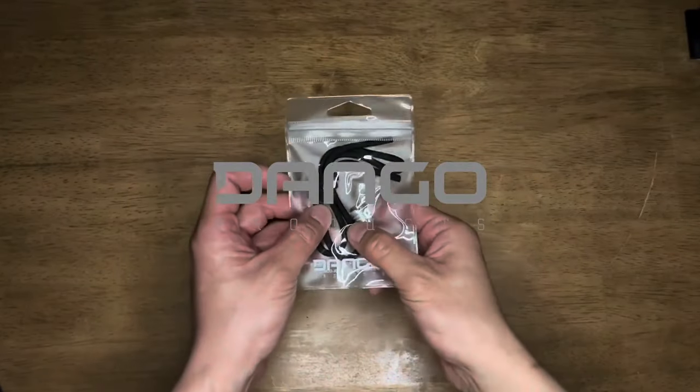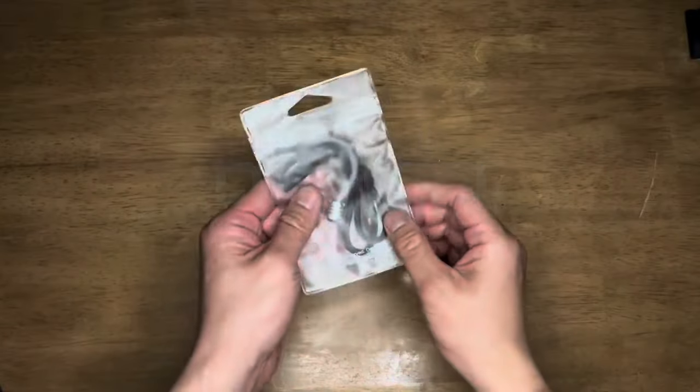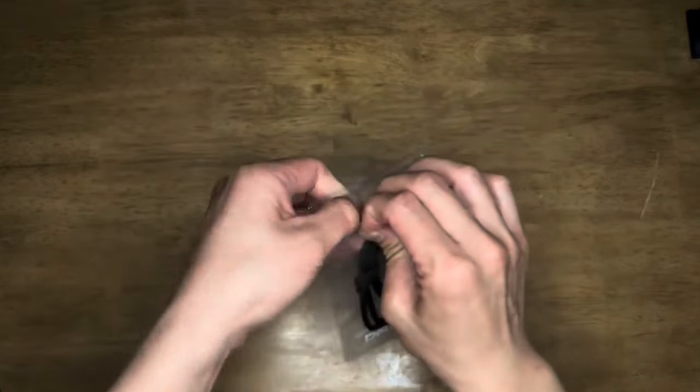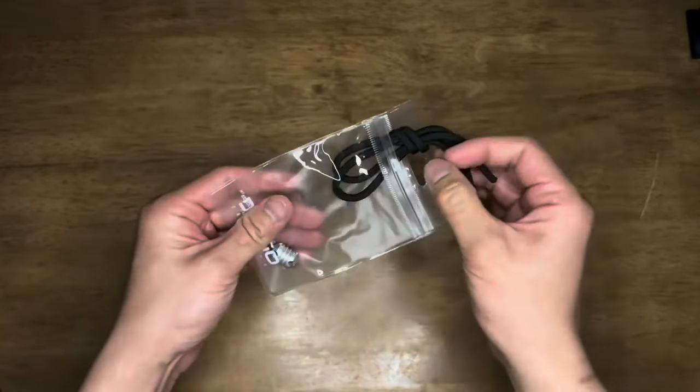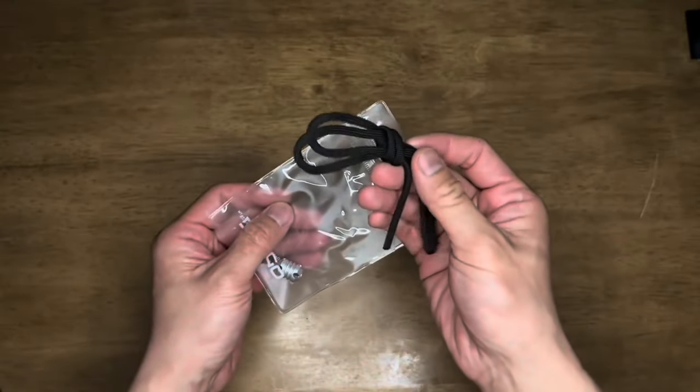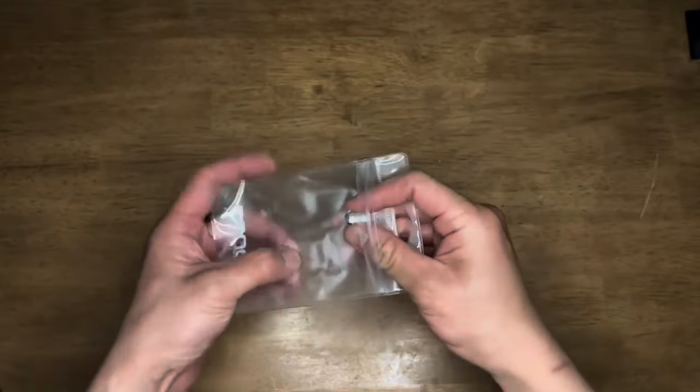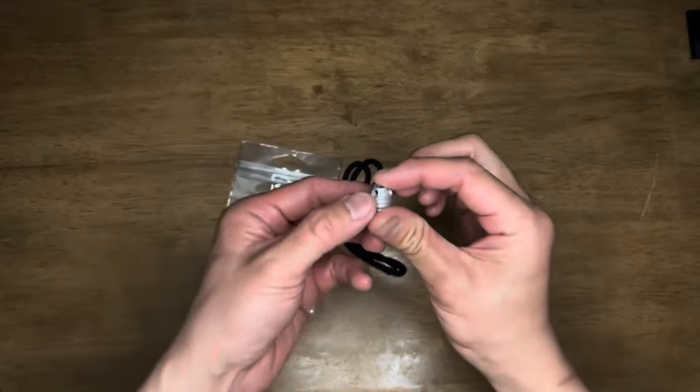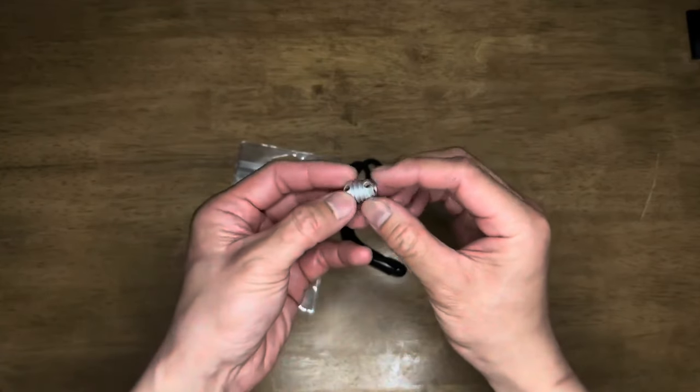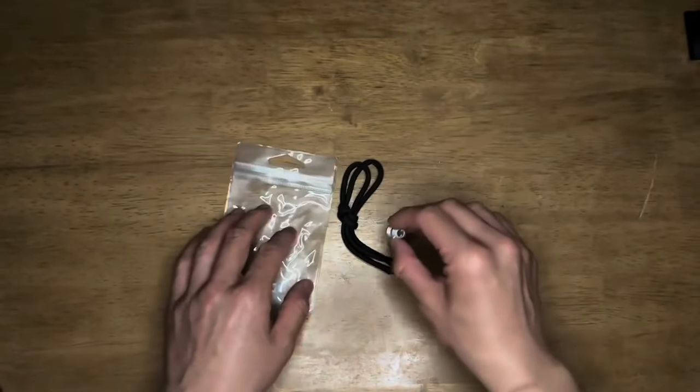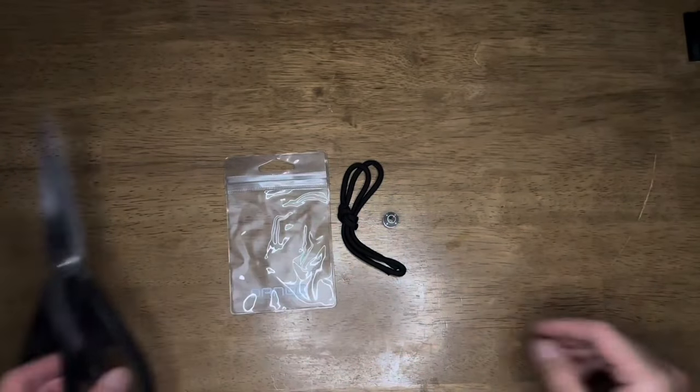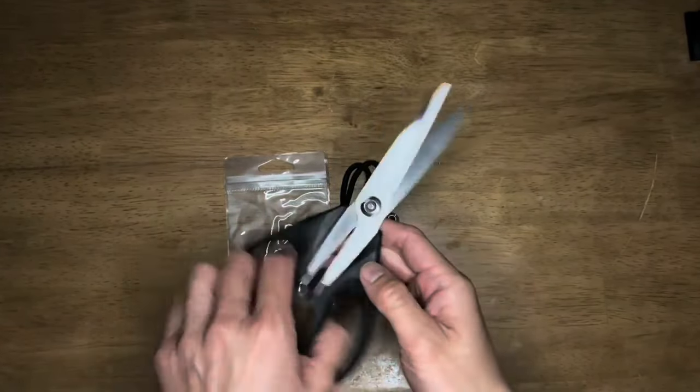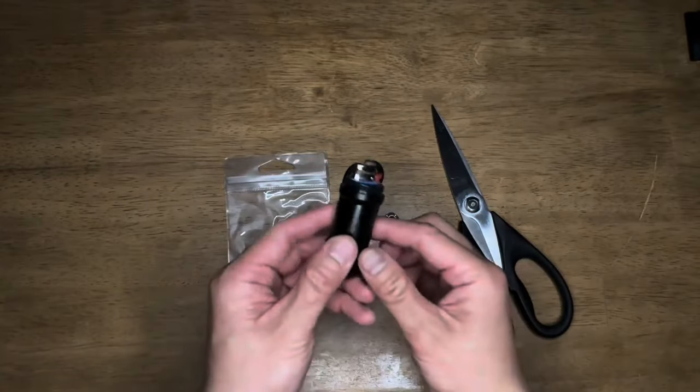Introducing the dangle bead with 550 paracord. This is a starter kit so you can weave your dangle bead however you like. For this project, you're going to need a scissor and a lighter.